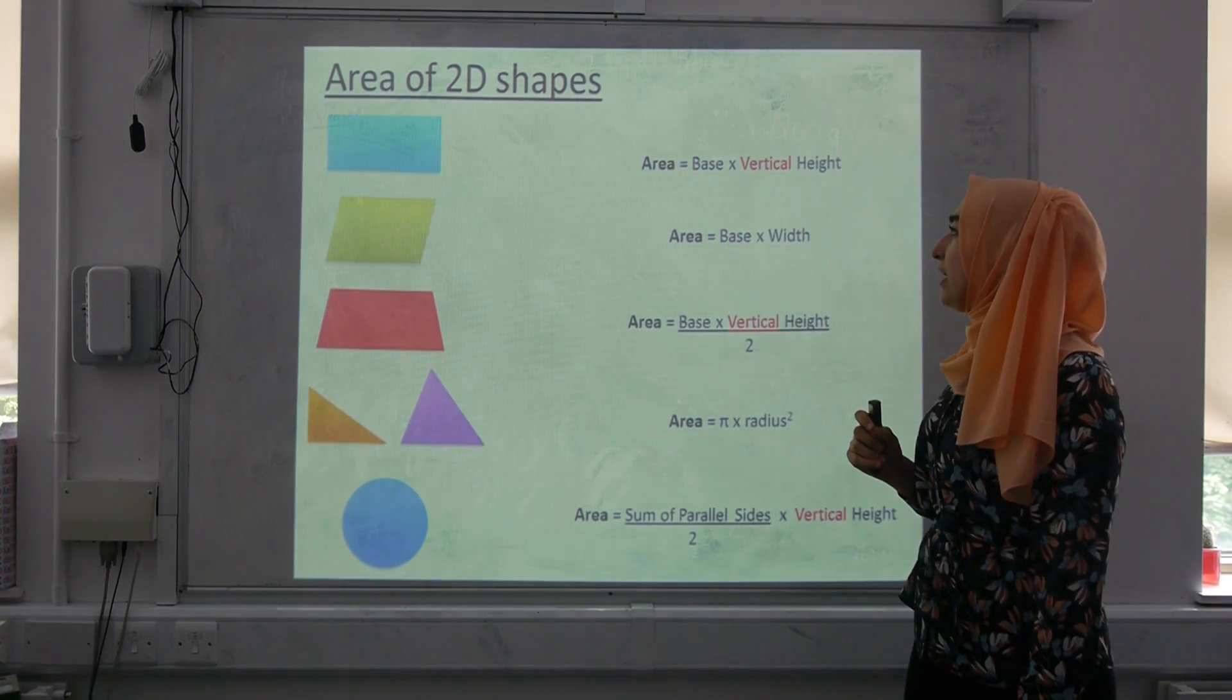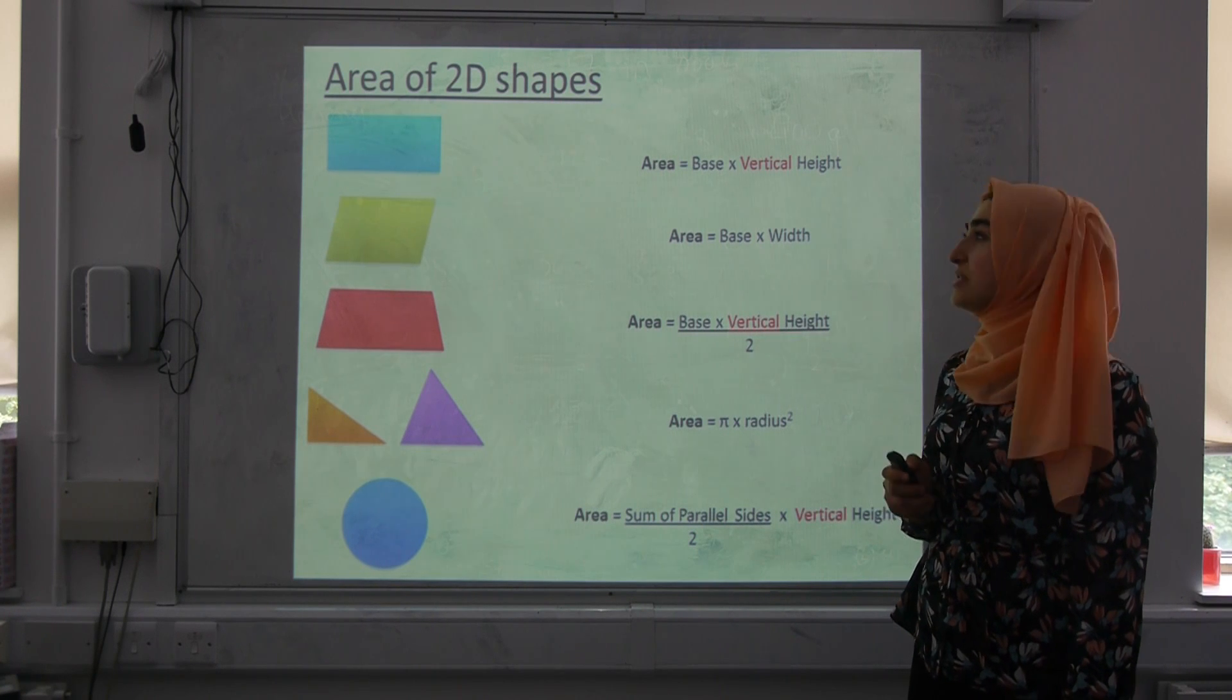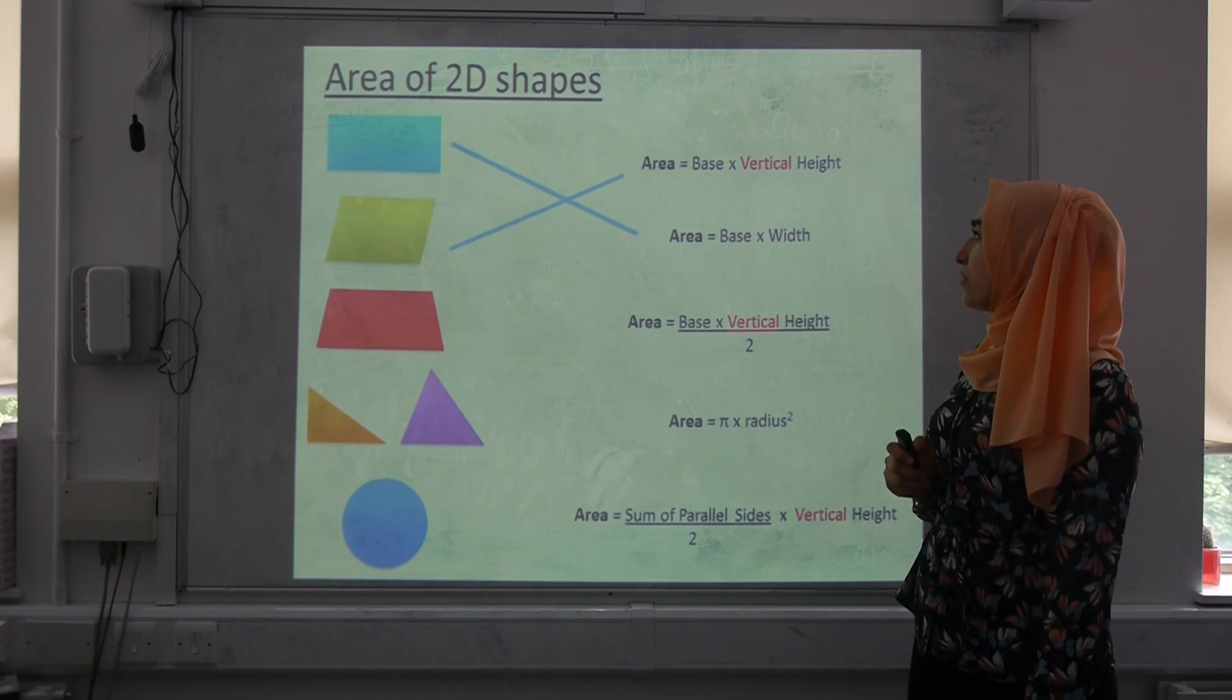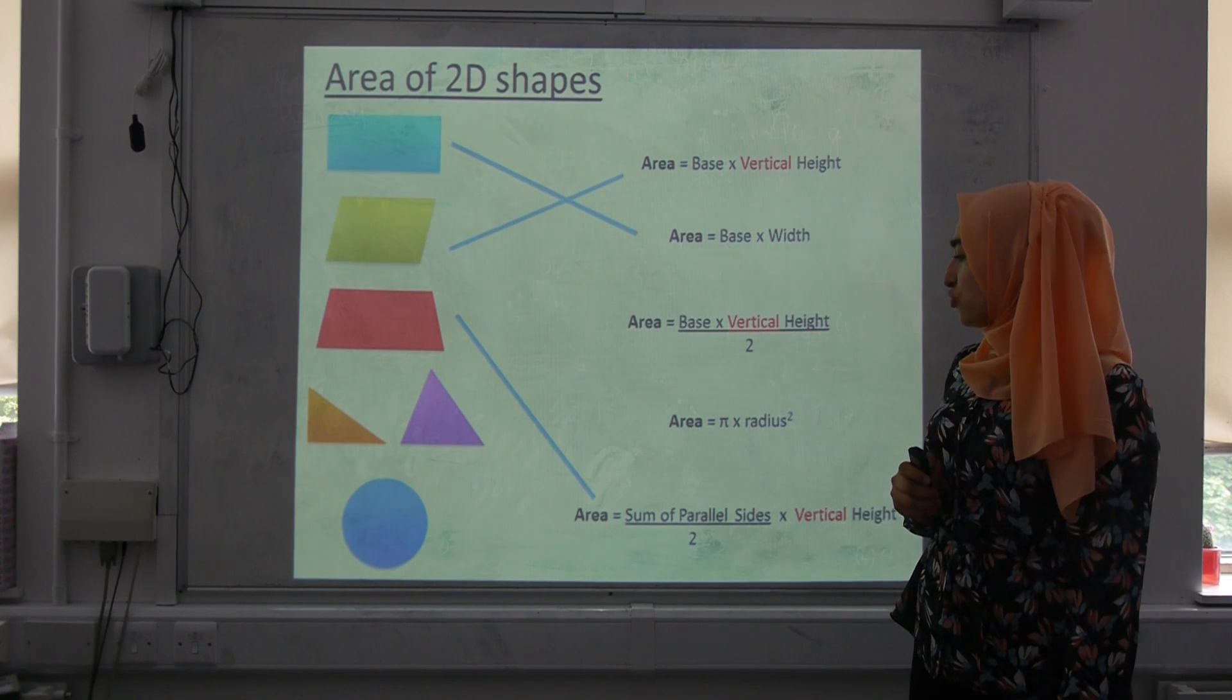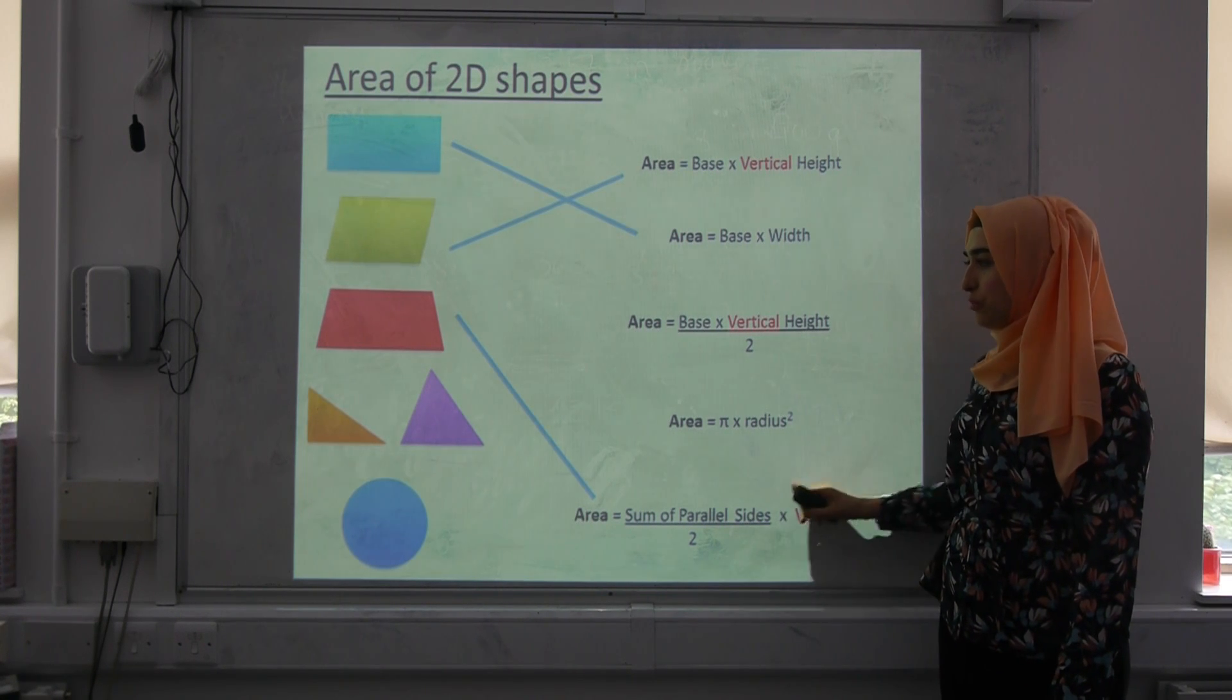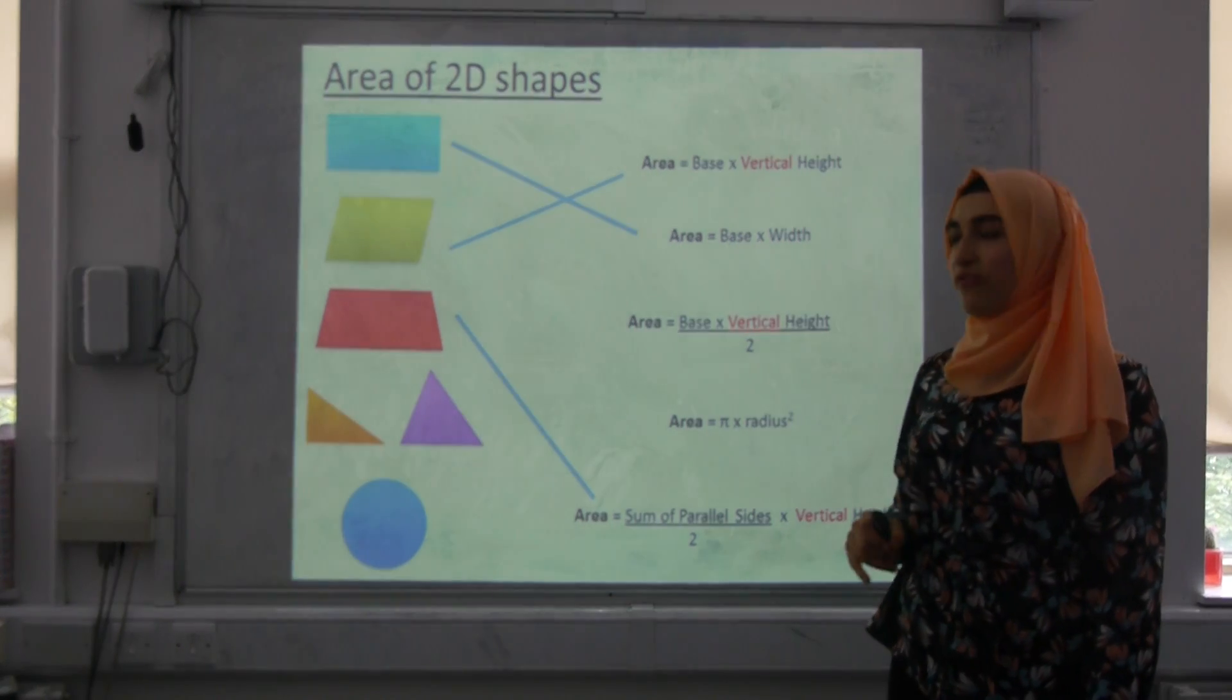Hopefully you have matched the areas correctly, and here are the answers. So the rectangle area is equal to base times width. Parallelogram area is equal to base times vertical height. Trapezium area is equal to sum of parallel sides divided by two and multiplied by vertical height. I've highlighted this keyword because it's not any height, it's the vertical height you're looking for.